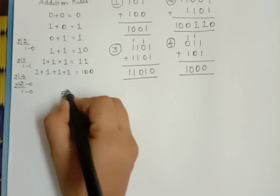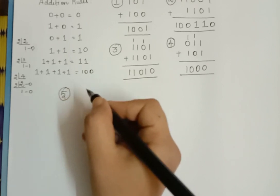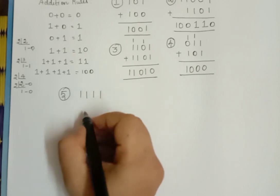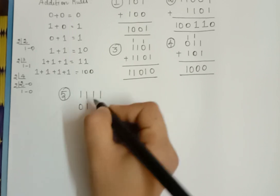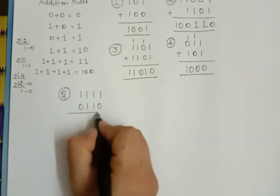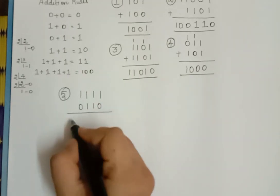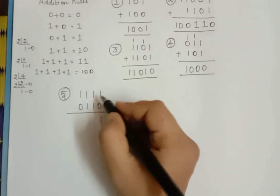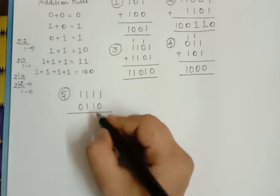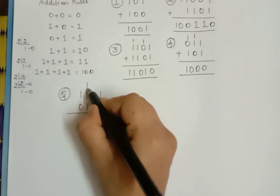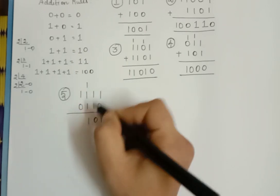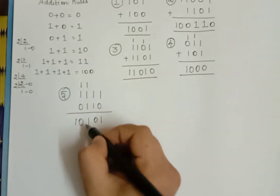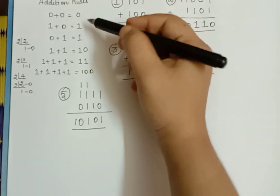Let us do some more problems. The next problem is adding 1111 and 0110. This lecture gives you the addition of different kinds of binary numbers. So: 1 plus 0 is 1, and 1 plus 1 is 0 with a carry over of 1. Then 1 plus 1 plus 1 is 1 with a carry over of 1. And then 1 plus 1 is 10. We are using the addition rule.